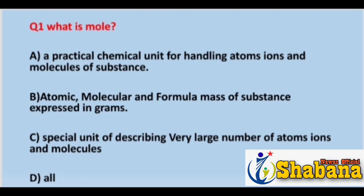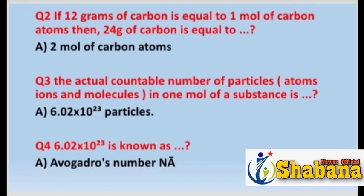Question number two: if 12 grams of carbon is equal to one mole of carbon atoms, then 24 grams of carbon is equal to what? It is 2 moles of carbon atoms. Since 12 grams of carbon equals one mole of carbon atoms, then 24 grams of carbon equals 2 moles of carbon atoms.